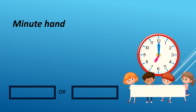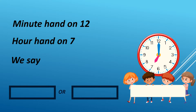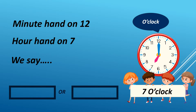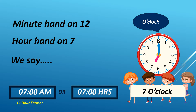Minute hand is on 12, hour hand is on 7 — we say 7 O'clock. It can either be AM or PM. For example, it is 7 AM in 12-hour format. We read it as 700 hours in 24-hour format.